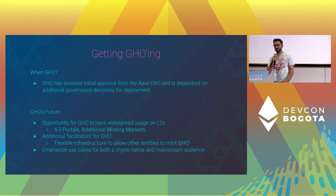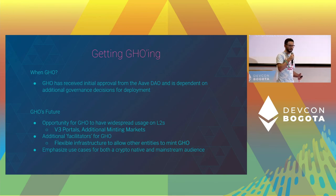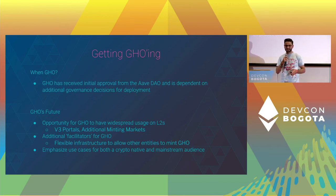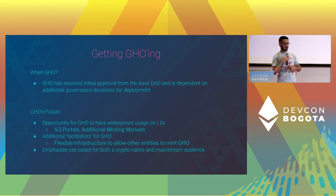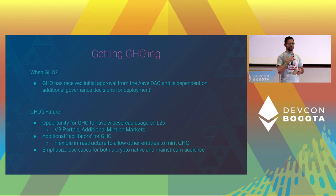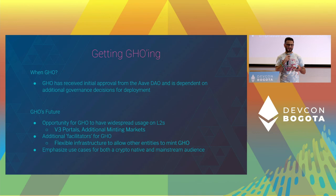GHO's future: we're hopeful we can move GHO to L2s, where lower fees present a large opportunity to have it used widely by both crypto-native users and the general population. Another interesting feature is facilitators — Aave is the first facilitator of GHO, meaning they have permission to mint GHO. In the future, Aave governance can add additional facilitators with the ability to mint GHO if approved. There's a lot of reviewing involved, and it will probably be more long-term, but something cool to look forward to. Thank you.